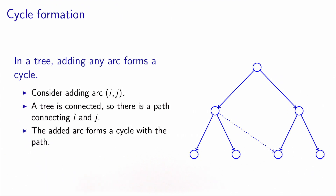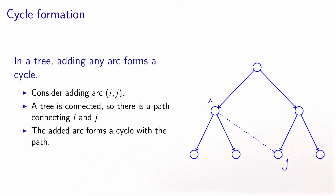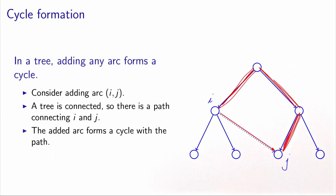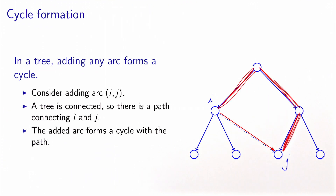A tree has no cycle. The next property says that it just takes one additional arc in the tree to form a cycle. Consider adding one additional arc i and j. We know that the tree is connected, so in the tree there is a path which connects i to j. This path connects i and j in the tree. And now, if we want to add this arc between i and j, we will form a cycle — composed of the path in the tree that connects i and j, and the additional arc that we want to add. This proves the result.